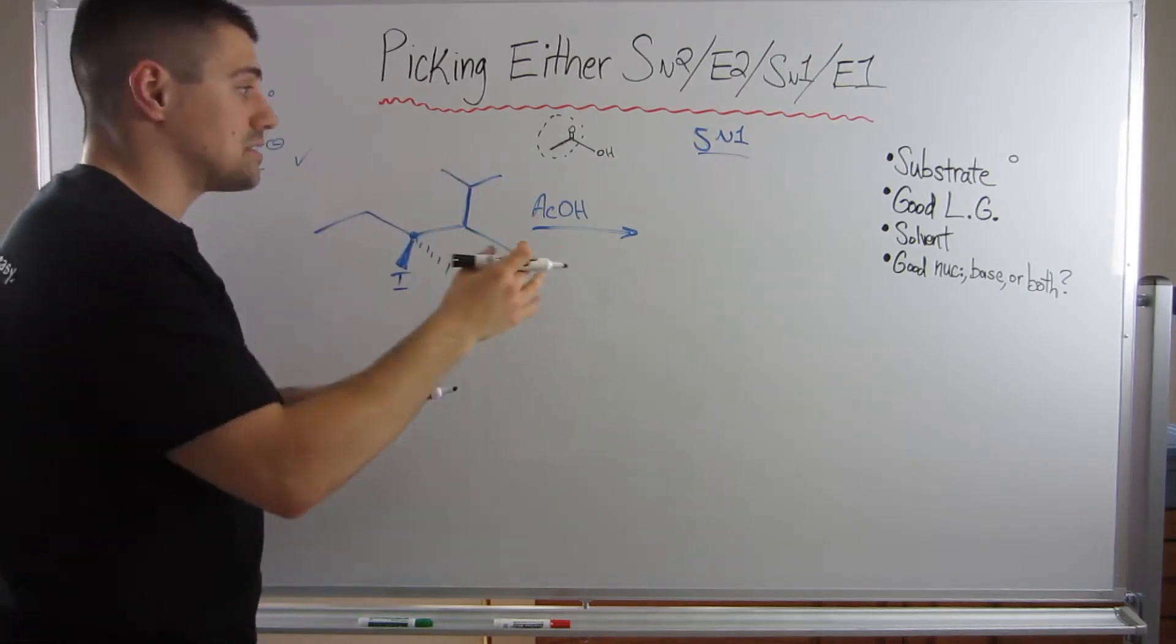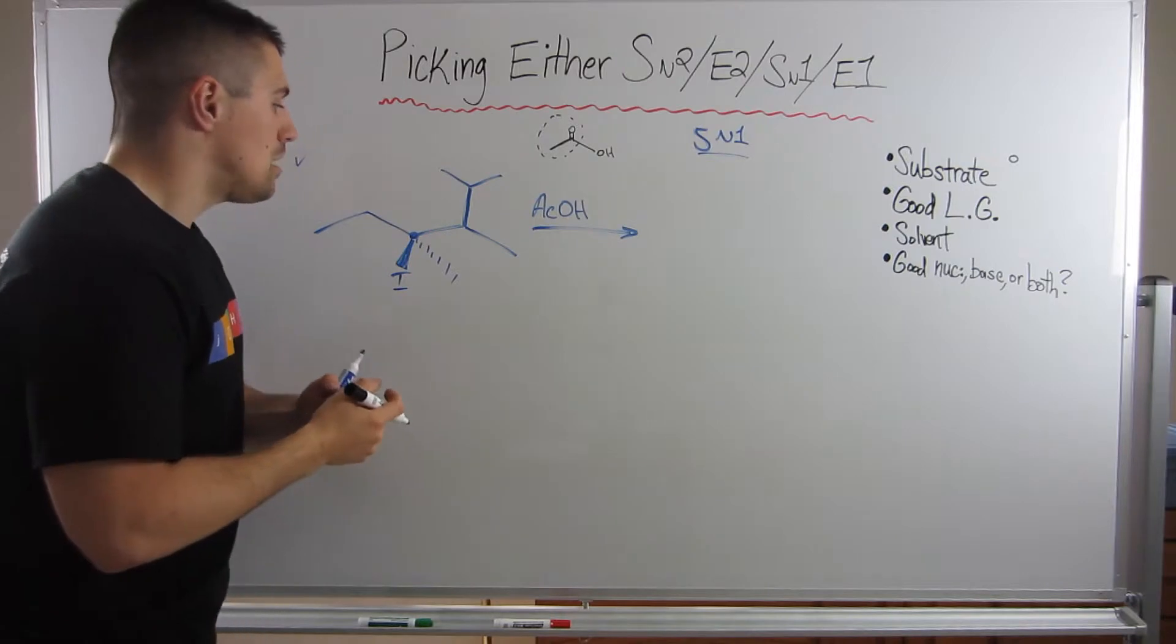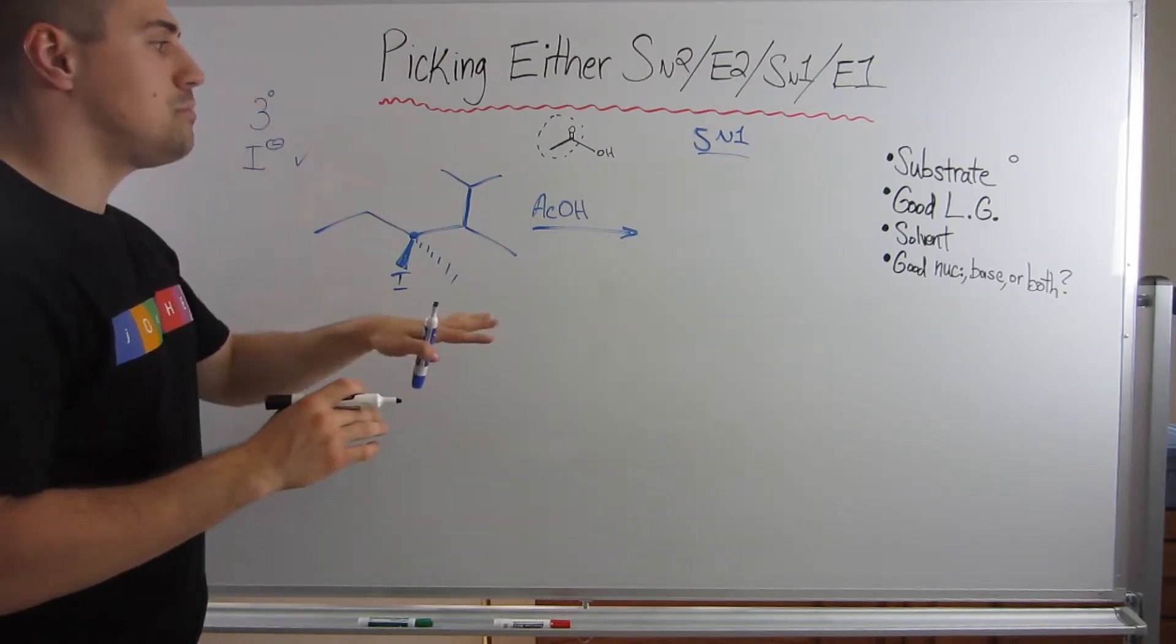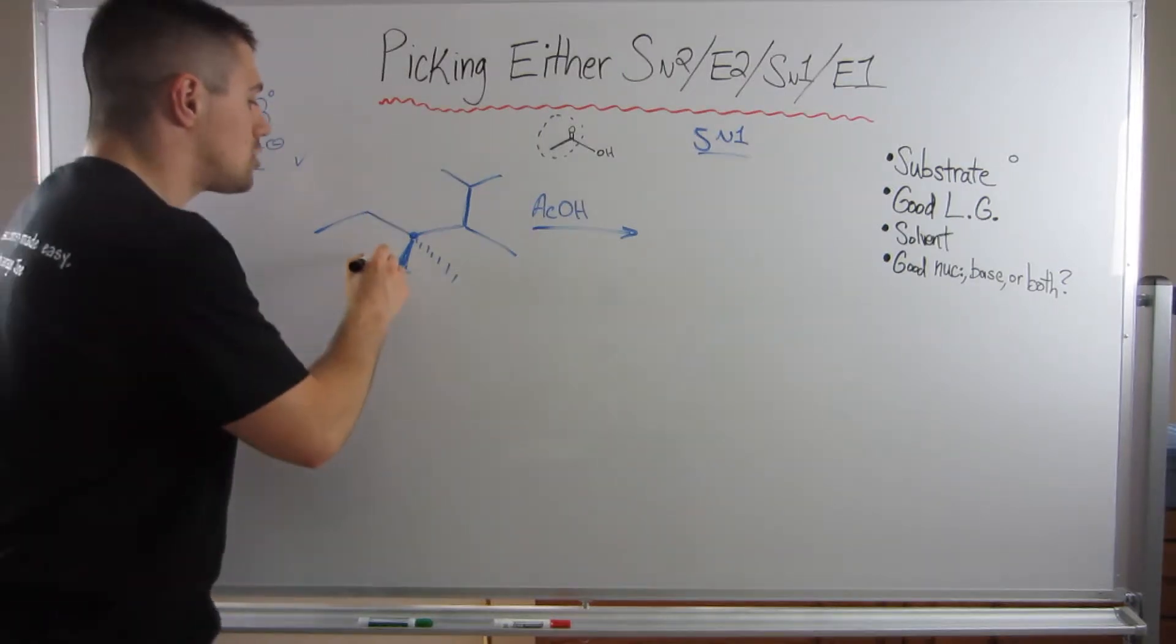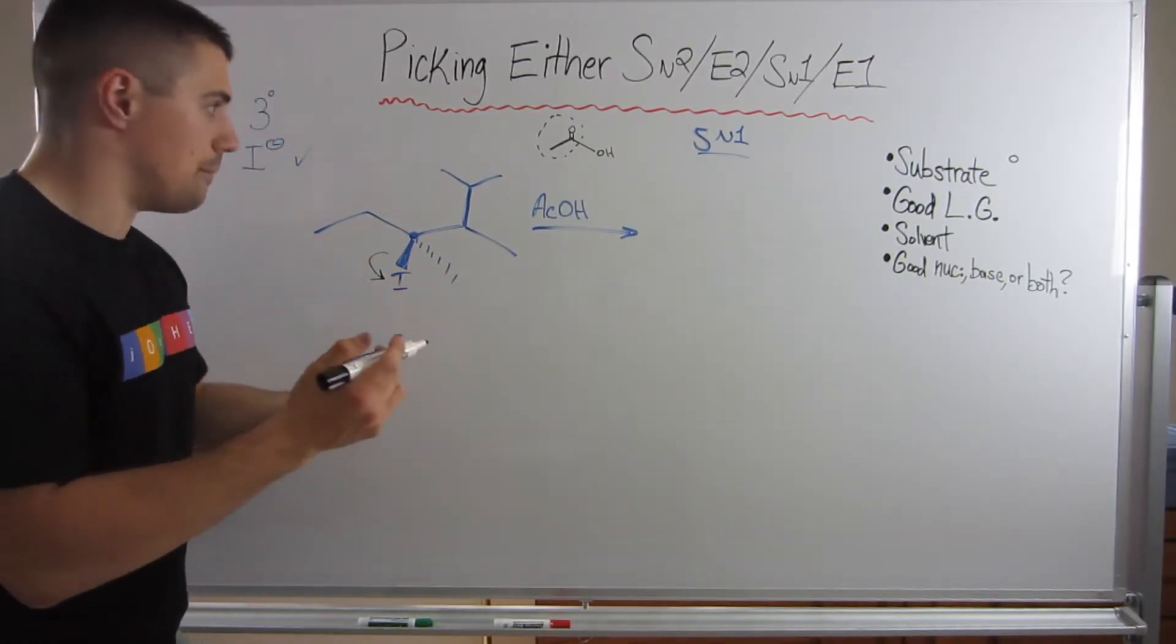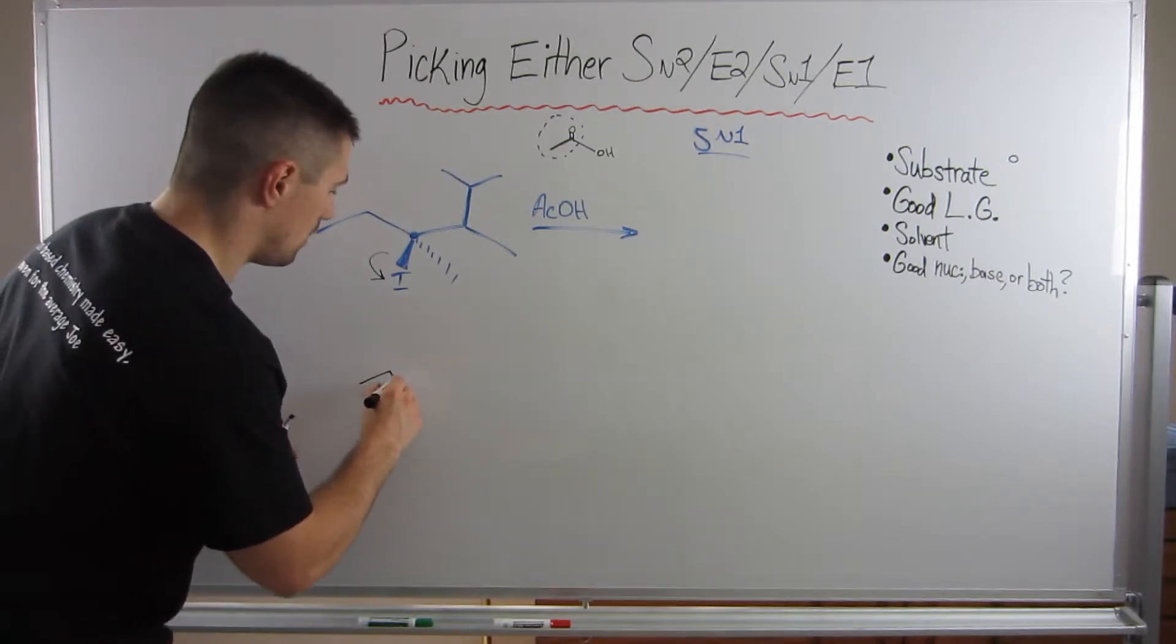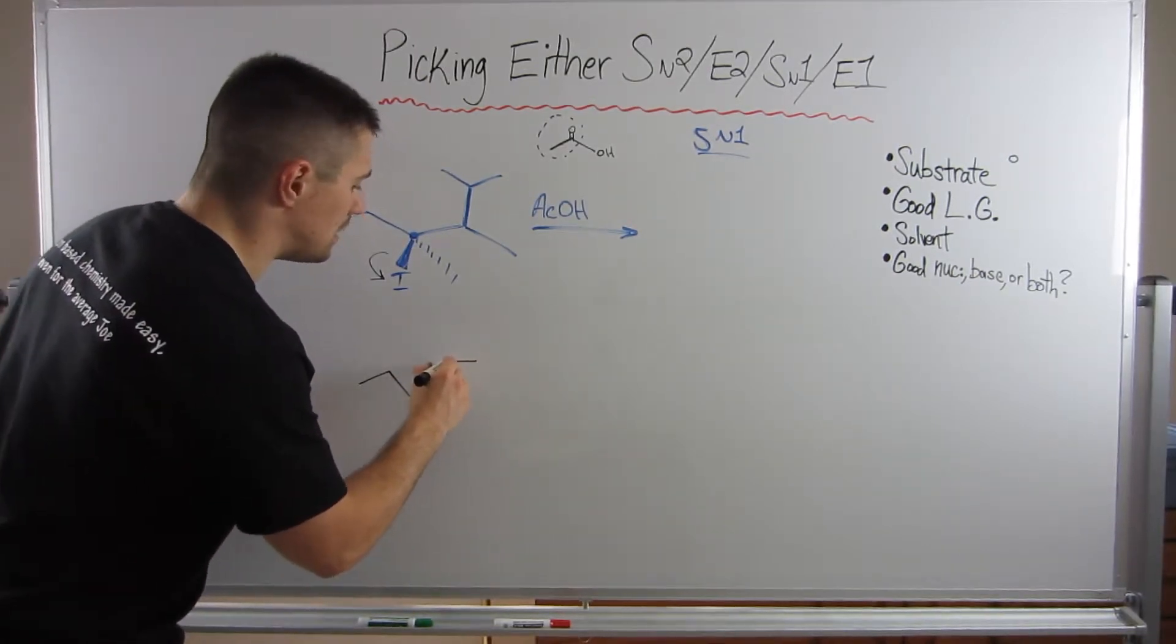So now that we've categorized it, we need to successfully complete the product, complete the reaction, right? So think about whenever I do SN1, I like to just at least draw the initial carbocation I make. So I just do the solvolysis step. All right. So I'm going to make a carbocation at this position.